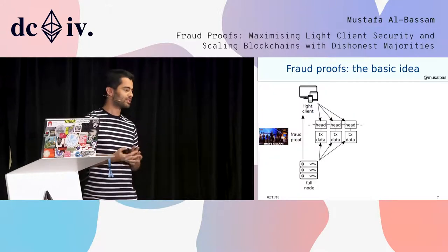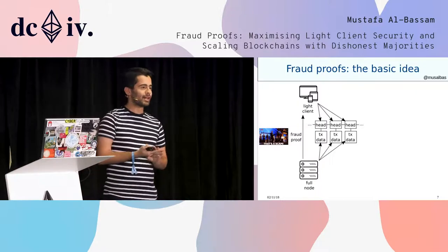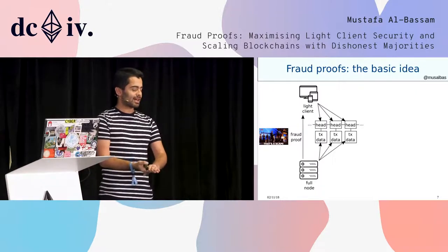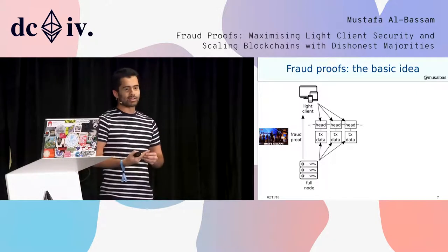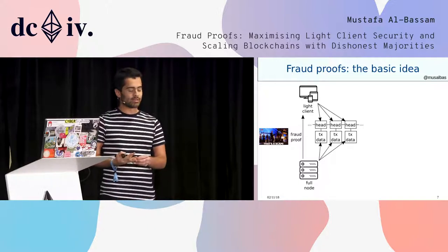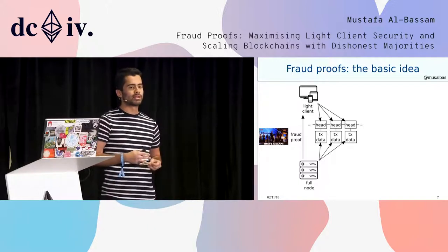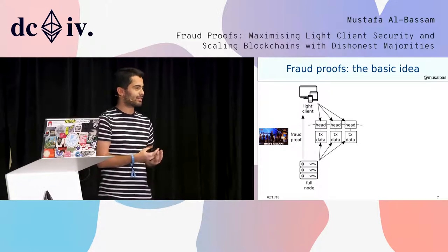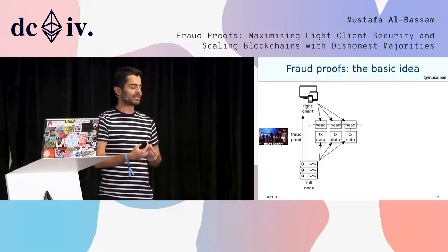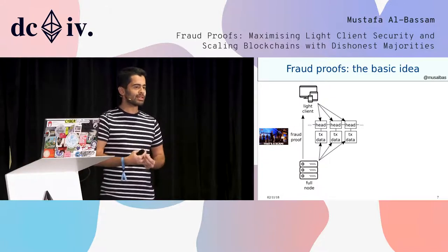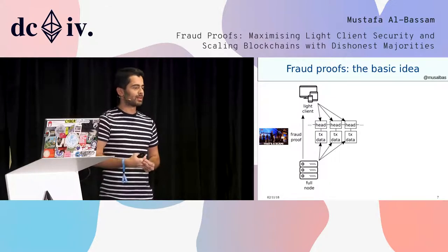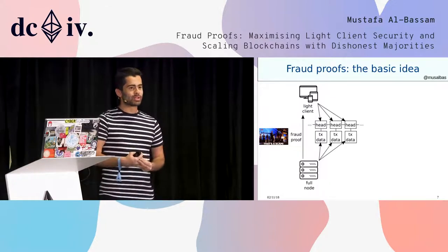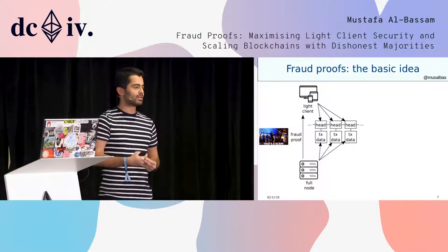The basic idea of fraud proofs is that you have light clients and full nodes. Light clients only download block headers, and full nodes also download the entire block, including the transaction data. If a full node detects that there is some invalid transaction in that block, then they will send that light client a compact proof that the block contains an invalid transaction. The size of that proof should be significantly lower than the size of that block.